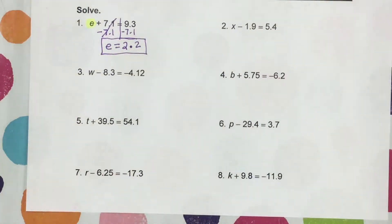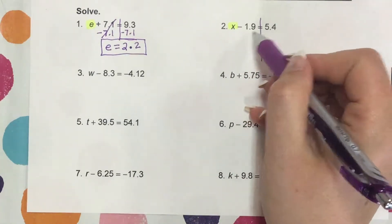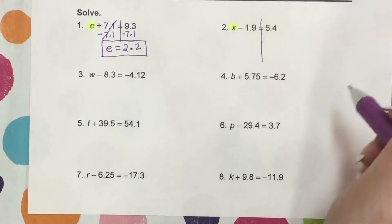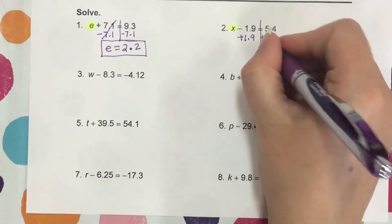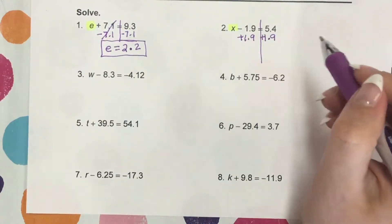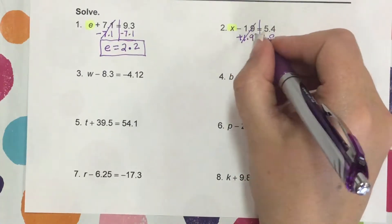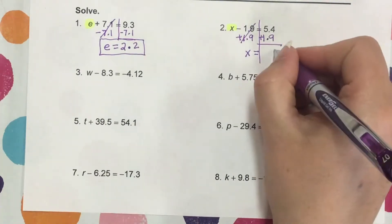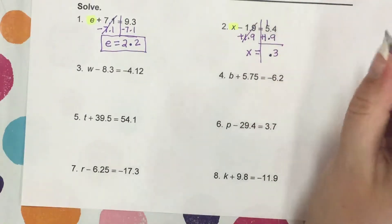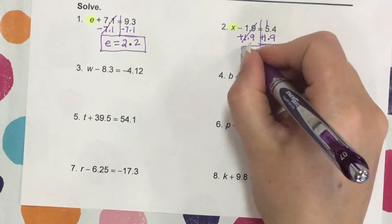On number 2, we're trying to isolate x. There's a negative 1.9, so we do the inverse operation of subtraction — addition. We add 1.9 to both sides, lining up the decimal places. The negative 1.9 and positive 1.9 cancel out, leaving x. Then: 4 plus 9 is 13, write the 3, carry the 1, decimal comes down, 5 plus 1 is 6 plus 1 is 7. So x equals 7.3.